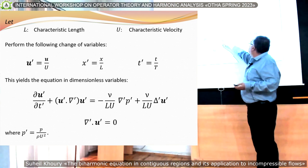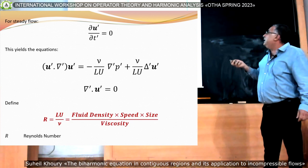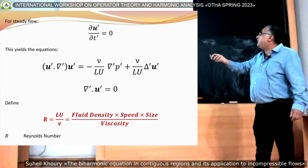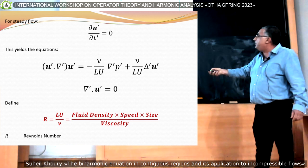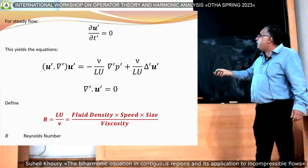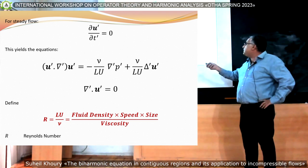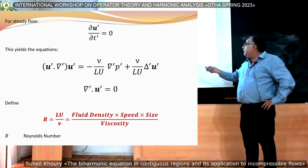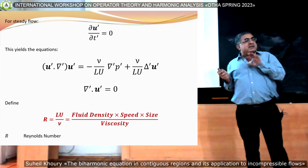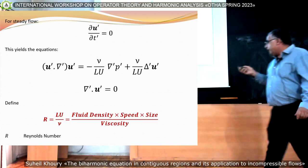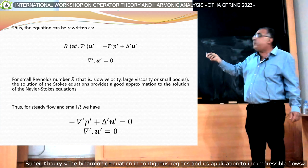For steady flow, the time derivative term is zero. This term is one over R, so I'm going to multiply both sides by R. For steady flow, the time derivative term disappears. This term is the reciprocal of the Reynolds number. The Reynolds number is fluid density times speed times size over viscosity. We're interested in small Reynolds number: numerator small — meaning very low speed or small size — or the denominator very large, meaning highly viscous fluid.